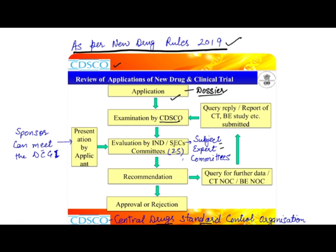Currently we have 25 SECs — Subject Expert Committees — from different therapy areas like oncology, microbiology, immunogenicity, and cardiology. These are experts from different fields, mostly very senior and top-level experts in their respective areas. Remember: we have 25 committees.